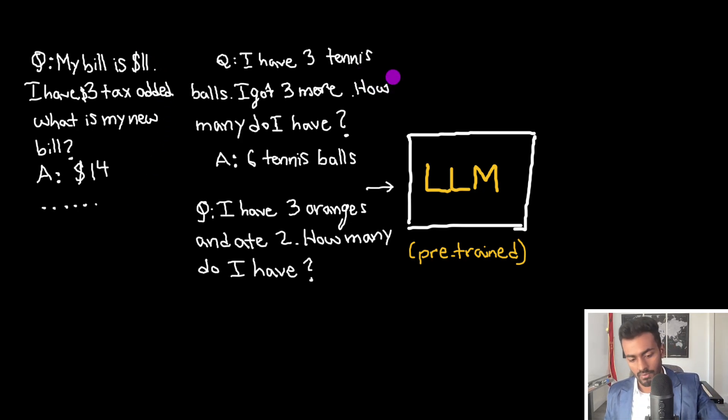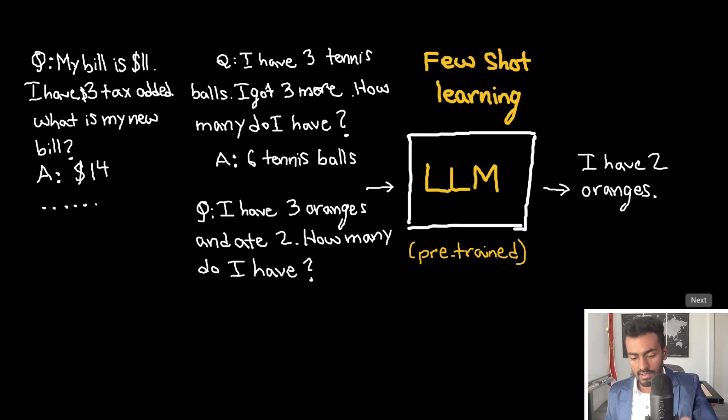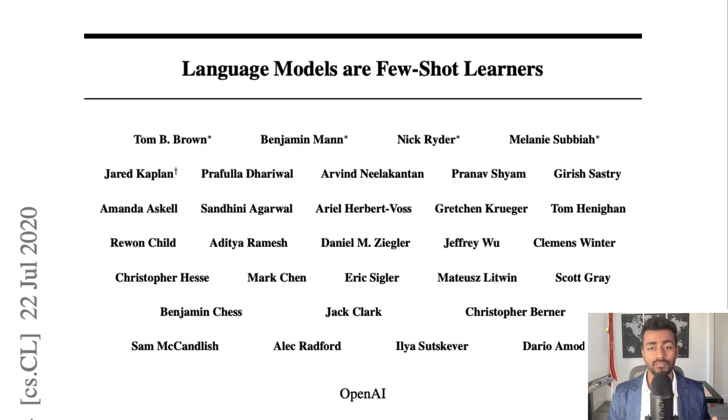And so you could imagine with few shot learning, we have a few examples where we have one question answer pair over here, we have another question answer pair over here, and probably some in between. And then we can pass in our question into the LLM, and it can then generate a response. And so because we have a few examples that we pass in with our prompt, this is few shot learning.